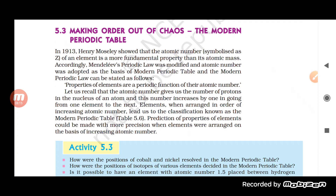Moving on to the next topic — the modern periodic table. The modern periodic table was given by Henry Moseley, and the classification was done on the basis of atomic number. Mendeleev's periodic law was the foundation upon which the modern periodic table was built, but while Mendeleev's table used atomic mass, the modern periodic table uses atomic number.